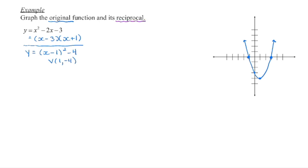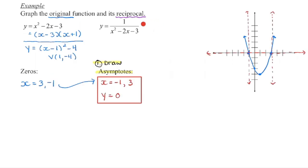If we take the reciprocal of that, we're now going to have 1 over that original function. The first thing we're going to do is determine where those asymptotes will lie. What are the values of x that will make that denominator equal to 0? Well, we know that will occur at the zeros of the original function — those x-intercepts — so I'm now going to draw in those asymptotes. Because we're not adding or subtracting anything to this reciprocal function, we are going to have an asymptote on the x-axis where y is 0.